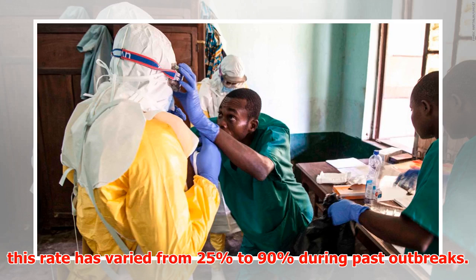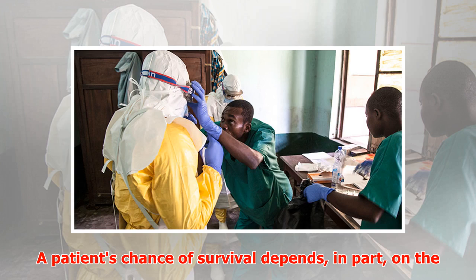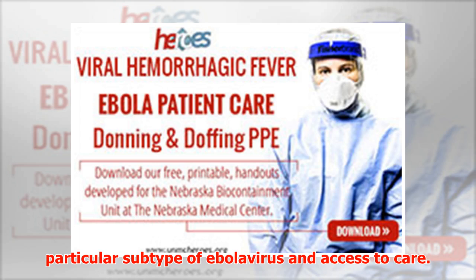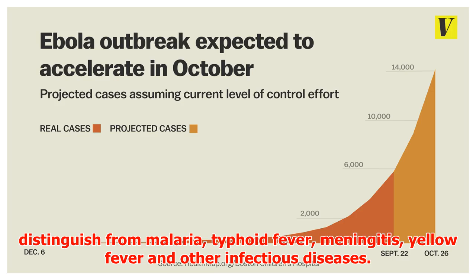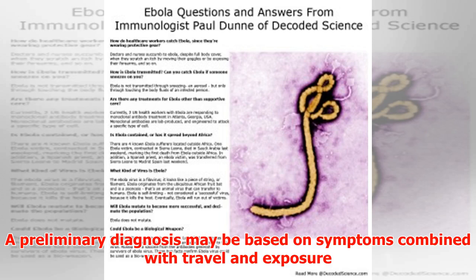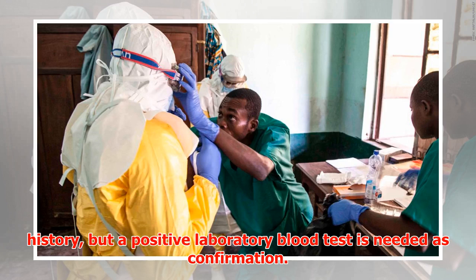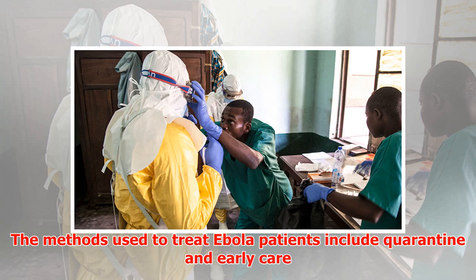The average case fatality rate for Ebola virus disease is about 50 percent, though this rate has varied from 25 to 90 percent during past outbreaks. A patient's chance of survival depends in part on the particular subtype of Ebola virus and access to care. In the early stages, diagnosis is difficult since Ebola can be difficult to distinguish from malaria, typhoid fever, meningitis, yellow fever, and other infectious diseases. A preliminary diagnosis may be based on symptoms combined with travel and exposure history.